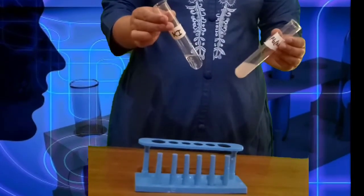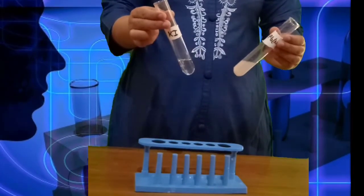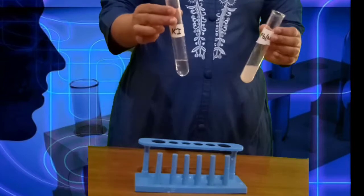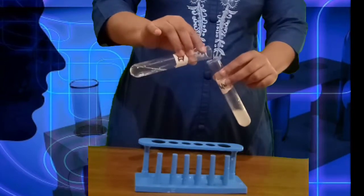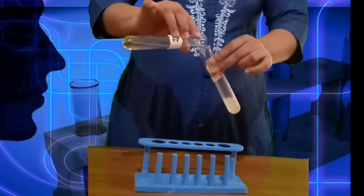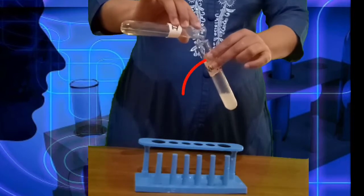Procedure: Prepare the aqueous solution of lead nitrate and potassium iodide. Here both the solutions are transparent. Now mix them and observe.